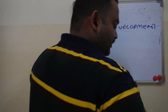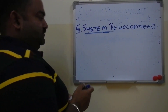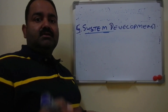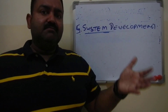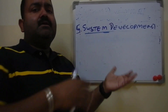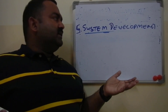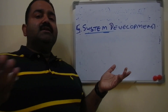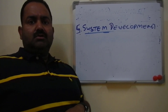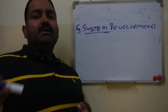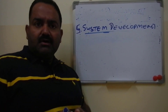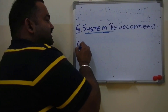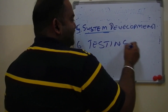Stage five is System Development. System development is the implementation of the design. In stage four we made blueprints; now we implement that design. For a software product, this is when you start writing the program in a programming language according to the design you made — we call this system development.